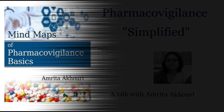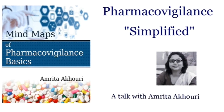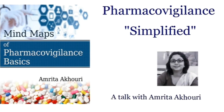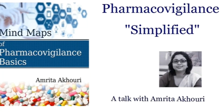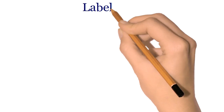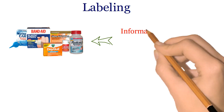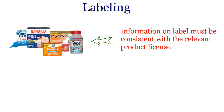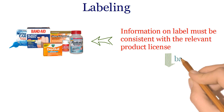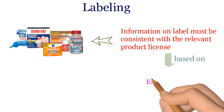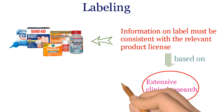Labeling sounds like something which has to do with the labels that we find on products, which provide certain information about the products. In the context of drug safety, labeling is the process of including information approved by authorities on the use of the product. This information must be consistent with the relevant product license, and the information on the labels is based on extensive clinical research which indicates safety and efficacy of products in humans.